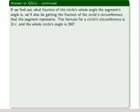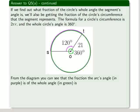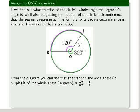So there we have the diagram again, this time in purple. We can see the segment itself and the angle it makes, 120 degrees. From the diagram you can see that the fraction the arc's angle in purple is of the whole angle in green is 120 over 360 degrees. And that's a third.